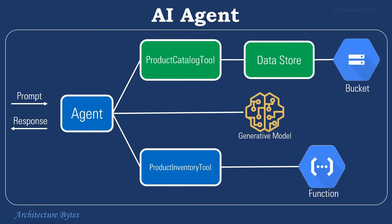Tools are of various types like OpenAPI, data store, or function. They perform a specific operation — for example, retrieving data from a data store or invoking a function using an OpenAPI schema definition. Let's define our product catalog tool.